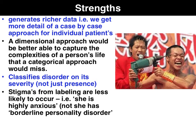Strengths of the dimensional approach: we get a richer set of data via the case-by-case approach, as opposed to the categorical approach which simply tries to put people into diagnostic categories based on reported symptoms. It classifies the severity of disorder, not just the presence or absence. And we are less likely to have stigmas from labelling under a dimensional approach.